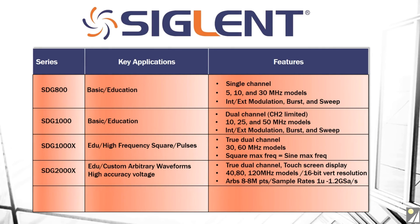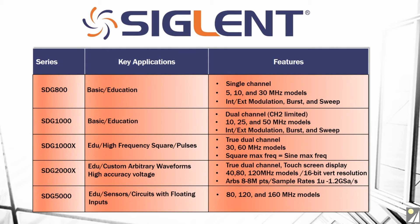If you are going to be doing custom arbitrary waveforms, I would lean towards the SDG2000 series. And finally we have the SDG5000 series, whose claim to fame is its floating outputs for use with sensors or circuits that require floating connections. Available in 80, 120, and 160 MHz models with floating up to 42 volts dual channel output. If you are using circuits that have sensors that are floating, you can emulate that sensor using the SDG5000 outputs.